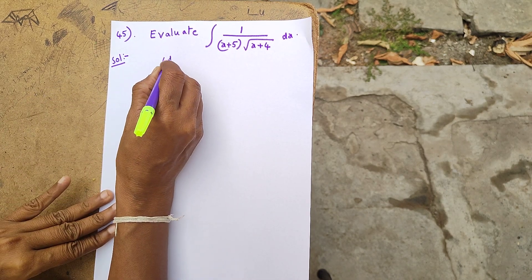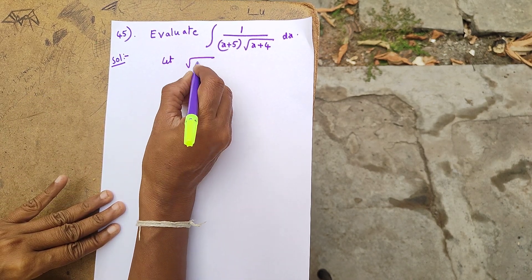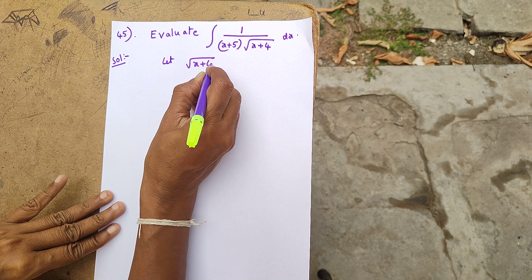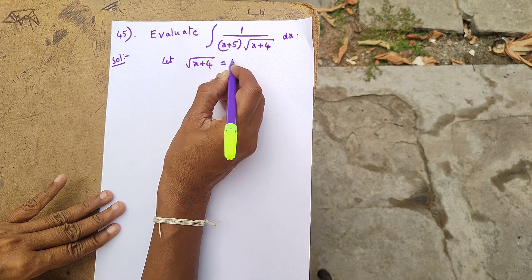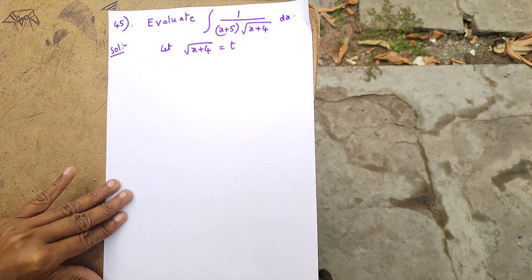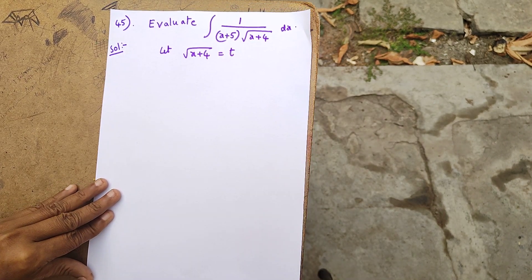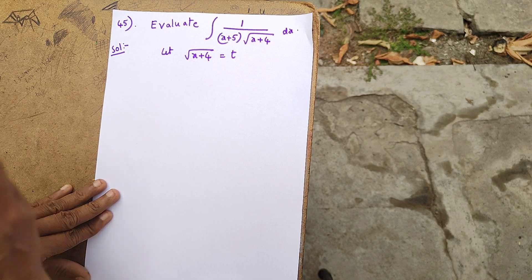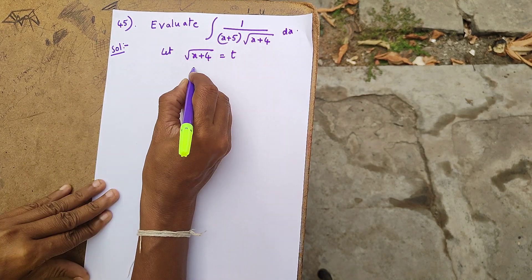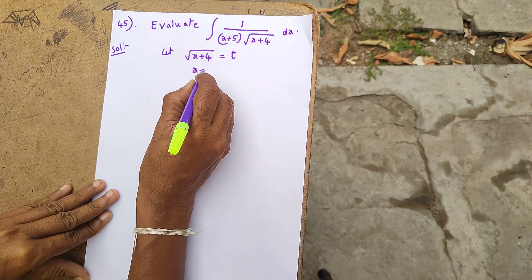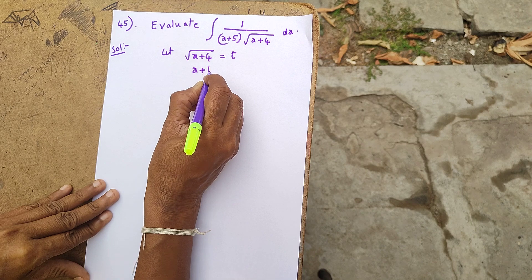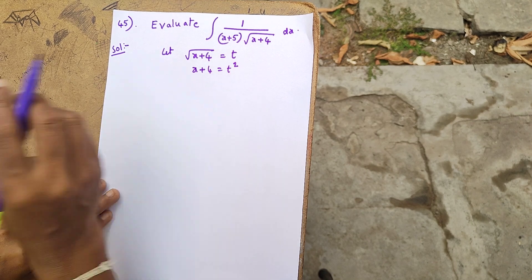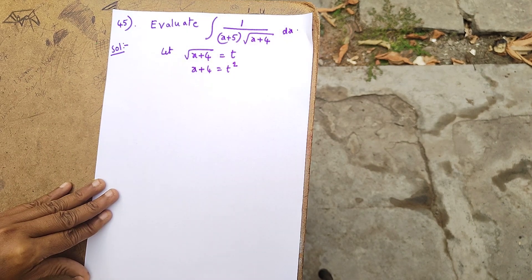Let root of (x plus 4) equal t. Squaring on both sides, x plus 4 equals t squared.